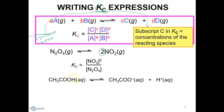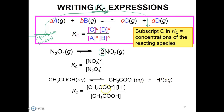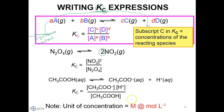Next, CH3COOH in the aqueous phase dissociates to form CH3COO⁻ aqueous plus H⁺ aqueous. The Kc expression is the concentration of CH3COO⁻ times the concentration of H⁺ over the concentration of the reactant CH3COOH. Note: the unit of concentration of CH3COOH must be in molarity, or moles per liter.